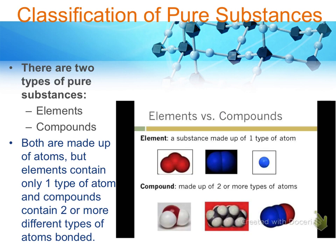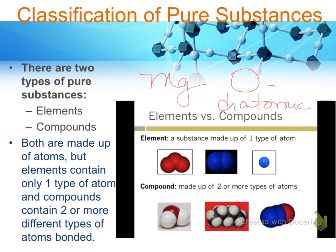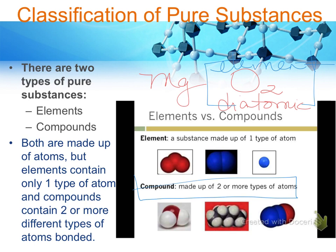Talking about elements and compounds a bit more — this can get a little confusing. Elements are all those in the periodic table, like magnesium. What about oxygen? Oxygen is one of the diatomic elements, so in nature it exists as two oxygen atoms chemically bonded together — you will not see a single oxygen atom existing naturally. So is oxygen an element or a compound? It's an element. The definition of a compound is that it must be made up of two or more different types of atoms. If the two or more atoms are the same, it is still an element.